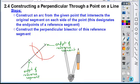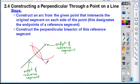What you'll now have is your perpendicular bisector of this reference segment. And so by connecting those, I now have my right angle.